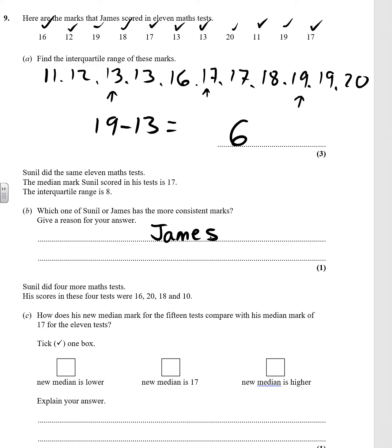Now, his scores in these four tests were 16, 20, 18, and 10. Right, he's done four more. But, how does the new median mark for the 15 tests compare with the median mark of 17 for the 11 tests? Well, because he's got two below 17 and two above 17, it doesn't actually change it.